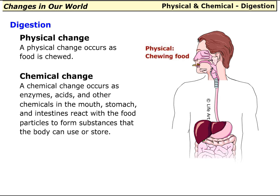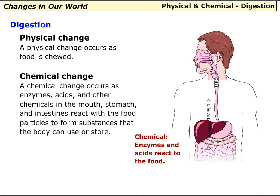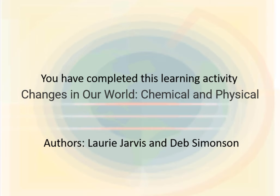Digestion — a physical change occurs as food is chewed. A chemical change occurs as enzymes, acids, and other chemicals in the mouth, stomach, and intestines react with the food particles to form substances that the body can use or store. You have completed this learning activity: Changes in Our World — Chemical and Physical.